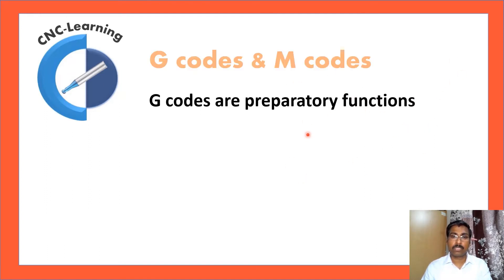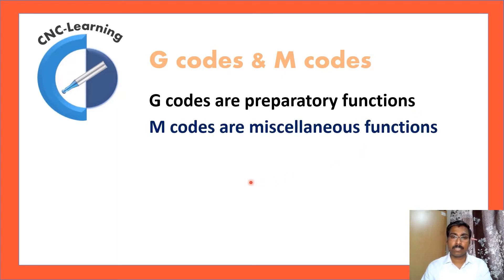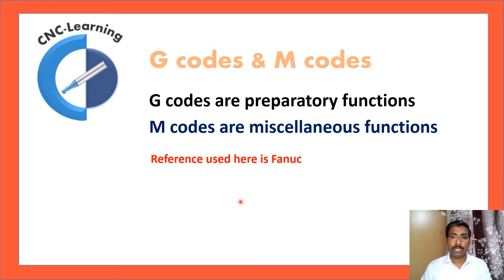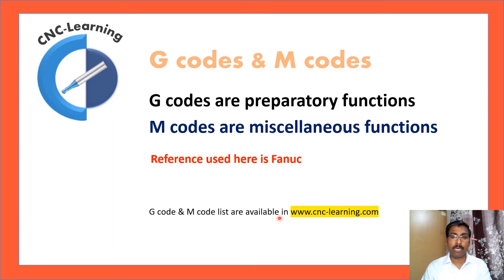Now let us see G-codes and M-codes. G-codes are preparatory functions for setting units and other things — how dimensioning is done, how movement is done, whether it is linear or circular. All these are controlled by G-codes. M-codes are called miscellaneous functions; all machine switching functions are done by M-codes. In this video, we are using the reference of the Fanuc controller. The G-code and M-code list is available at cnc-learning.com, free of charge.